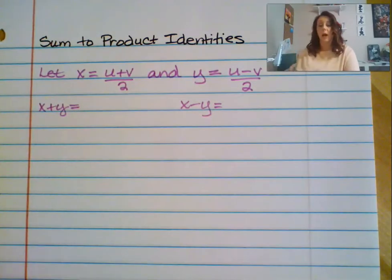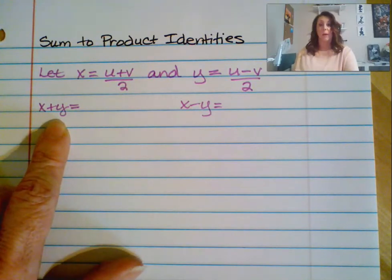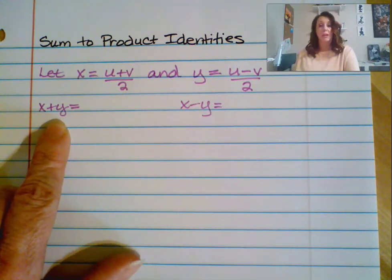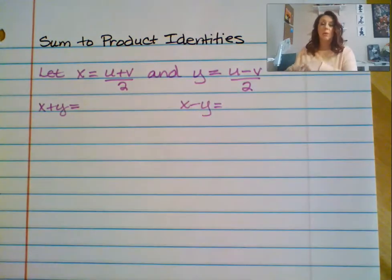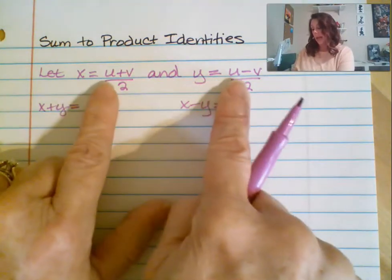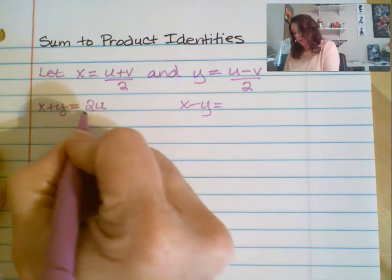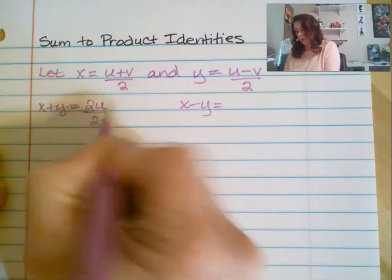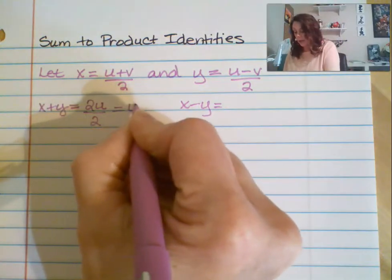This is going to save us some time when it comes to setting up the sum-to-product identities. When we add x and y, we need a common denominator — they already have a common denominator of 2. We add the numerators: u plus u becomes 2u, and the v and negative v cancel each other out. So we get 2u over 2, which simplifies to u.